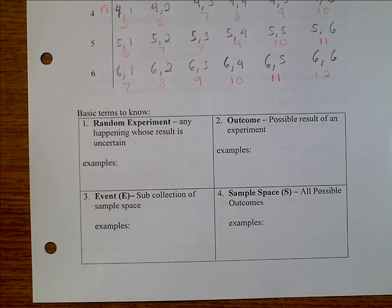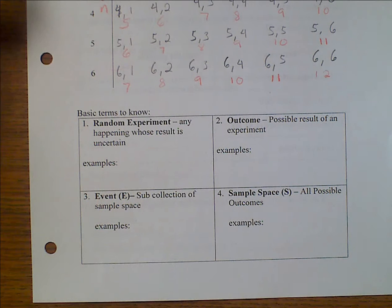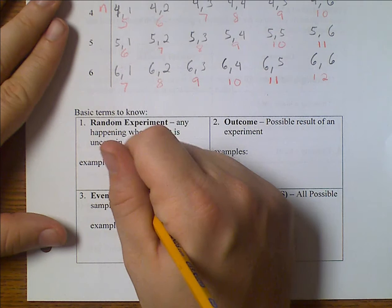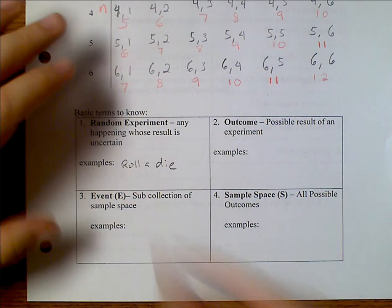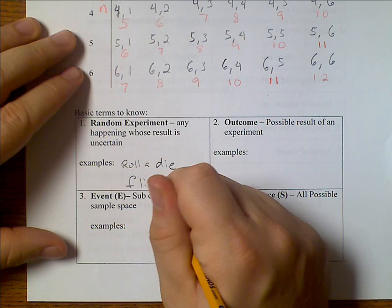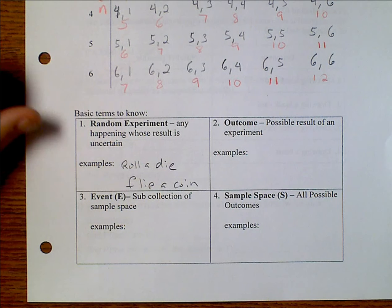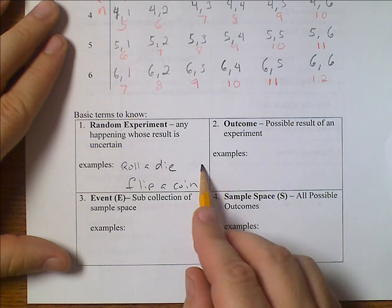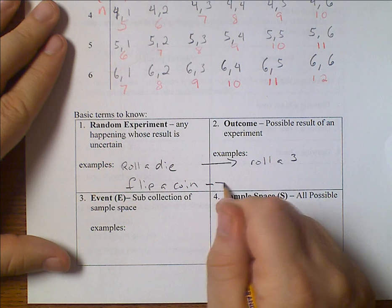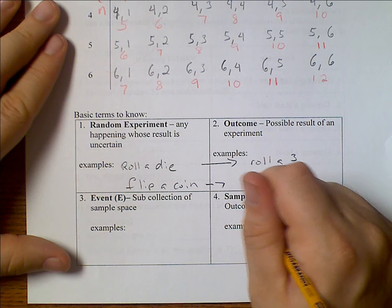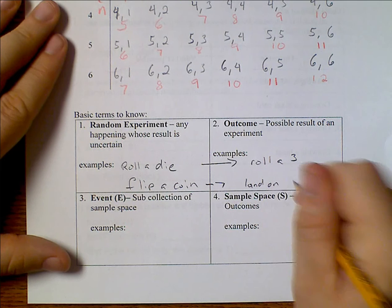Let's get to know some basic terms. We have a random experiment, the outcome, the event, and our sample space. A random experiment is any happening whose result is uncertain. So I can say that I can roll a die or I can flip a coin. An outcome is one example. So I may roll a three or I may land on tails.